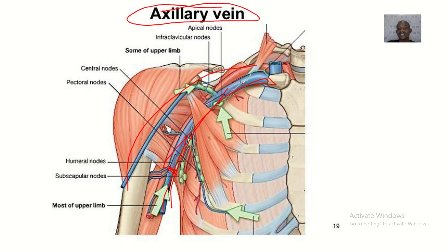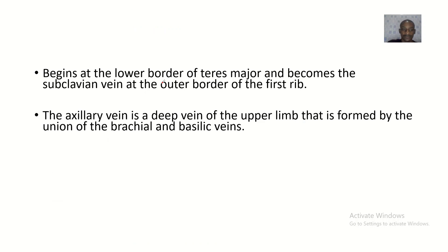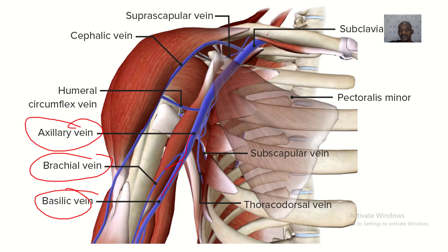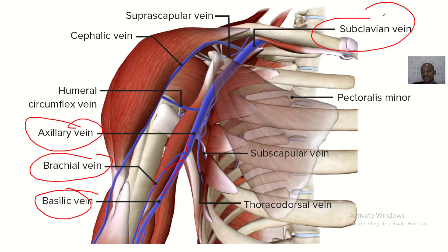Anything above the scapula is not the axillary vein — it becomes the subclavian vein. The axillary vein is a deep vein of the upper limb formed by the union of the brachial vein and the basilic vein. As this image illustrates, the two come together and join to become the axillary vein, which then becomes the subclavian vein once it is out of the region of the clavicle.